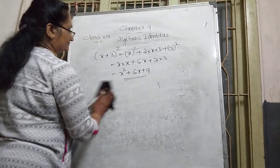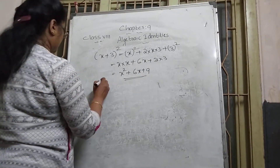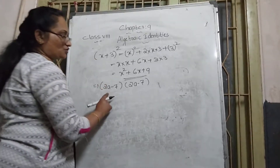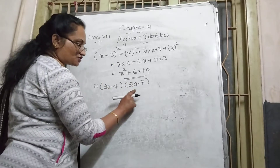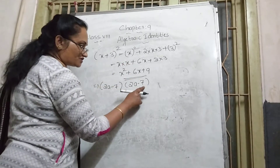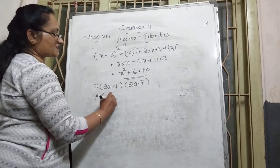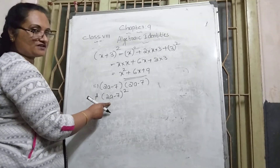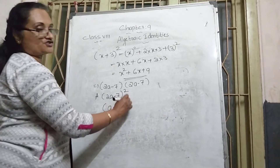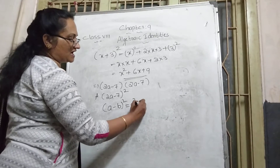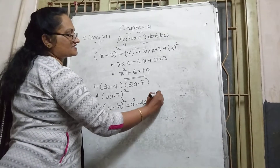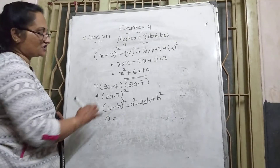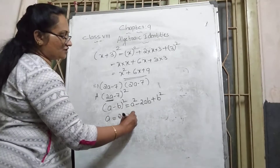The second question is a minus case: (2a − 7)(2a − 7). Inside two brackets: first bracket has 2a and second bracket also has 2a. Minus 7 is the second term in both — everything is the same. So the bracket is repeated two times. We express it as (2a − 7)², which is in the form of the identity (a − b)².